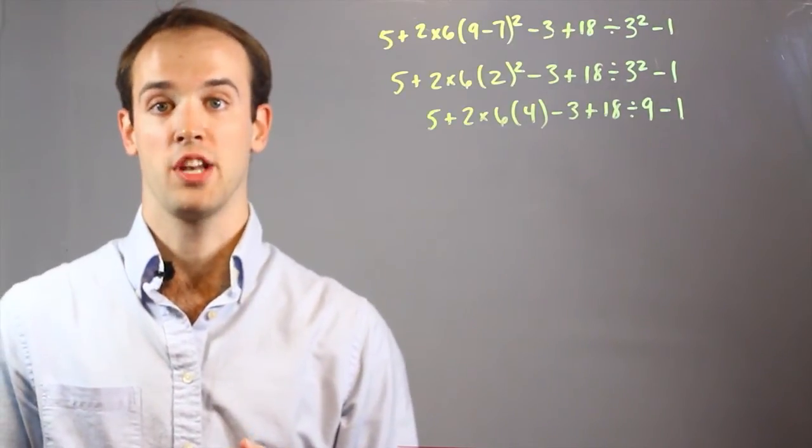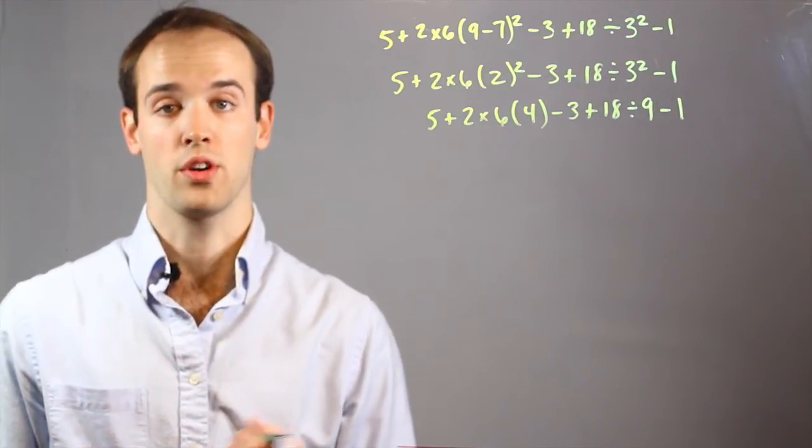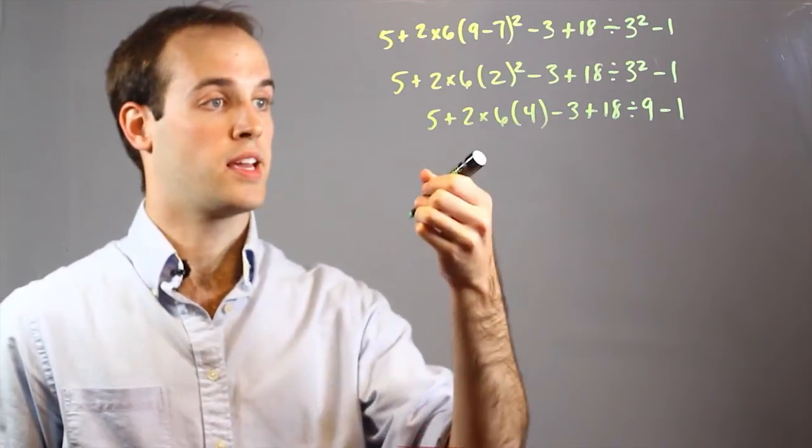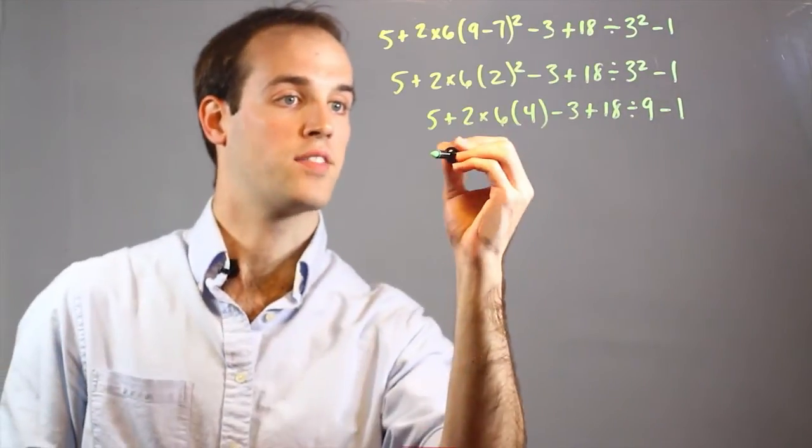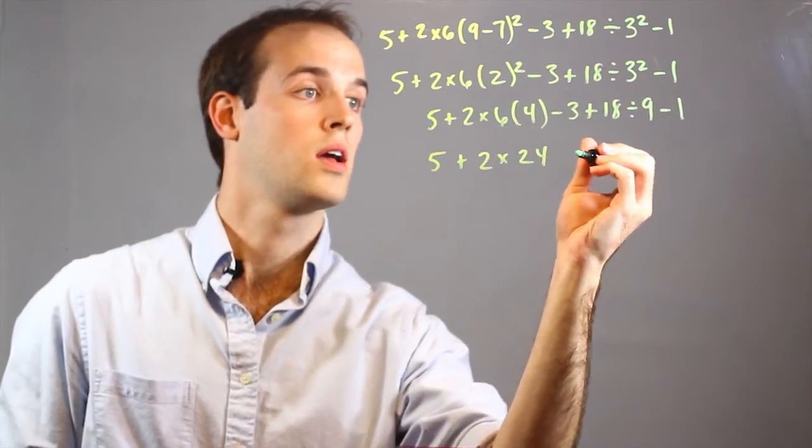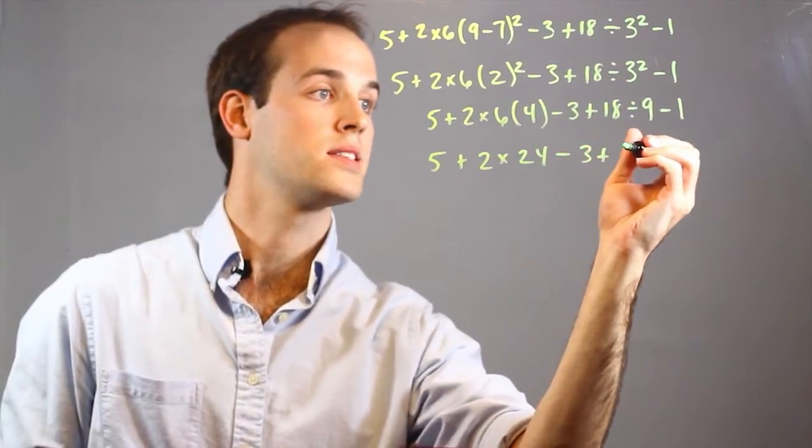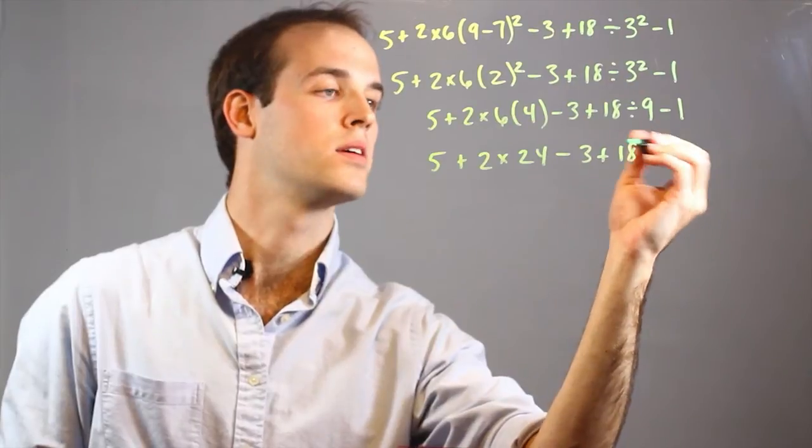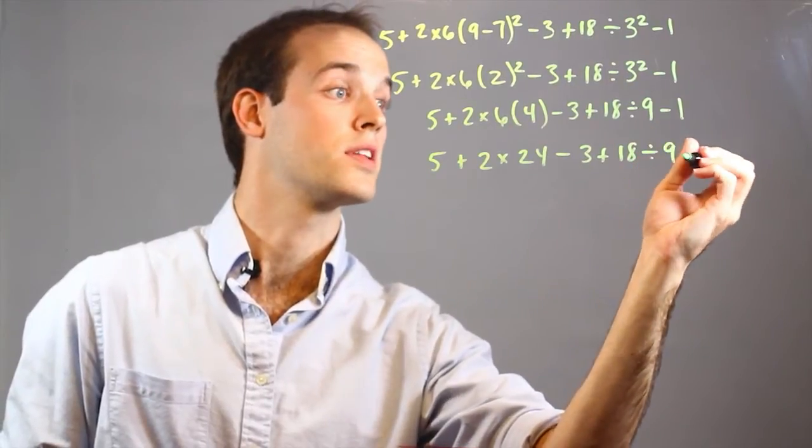And now the next step is multiplication and division, which can be done in any order. So I'm going to take care of those in this step. I've got 5 plus 2 times 24, minus 3, plus 18, divided by 9, which I'll take care of on the next step.